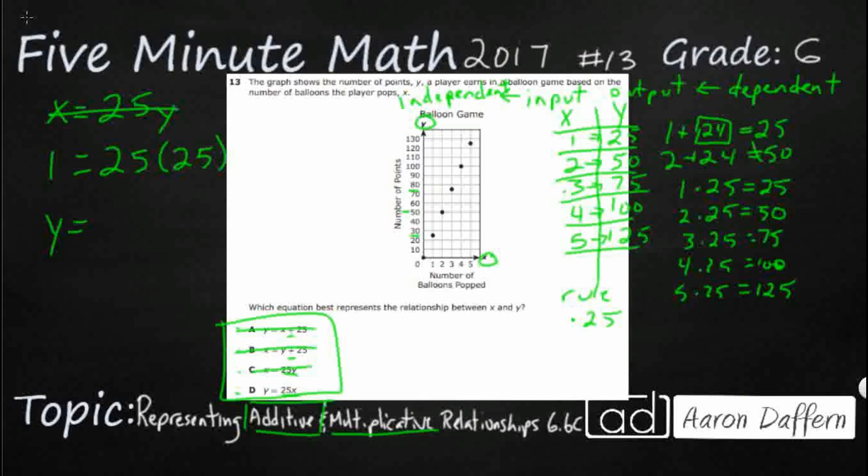Y, our dependent variable, equals 25 times X, our independent variable, so that's 25 equals 25 times 1, and yes. That is good, and we just replace those values, and we have our answer, which is D. Thank you very much.